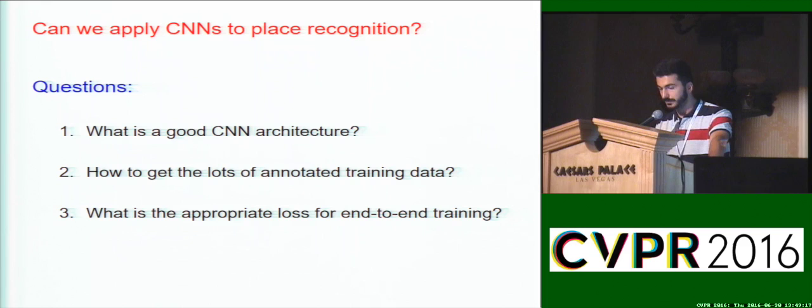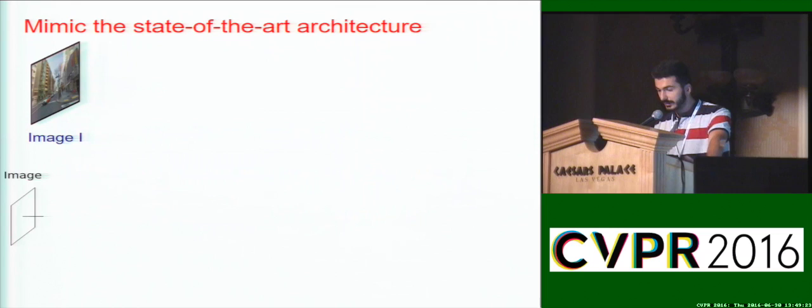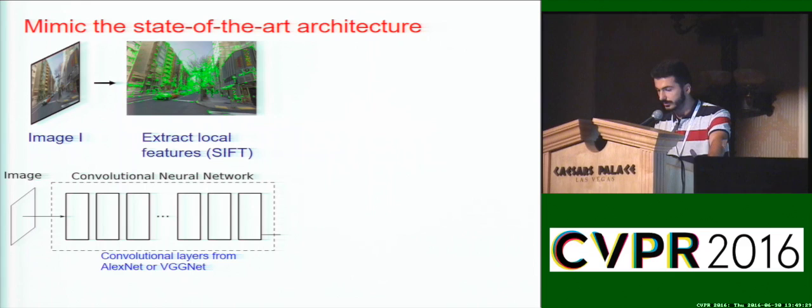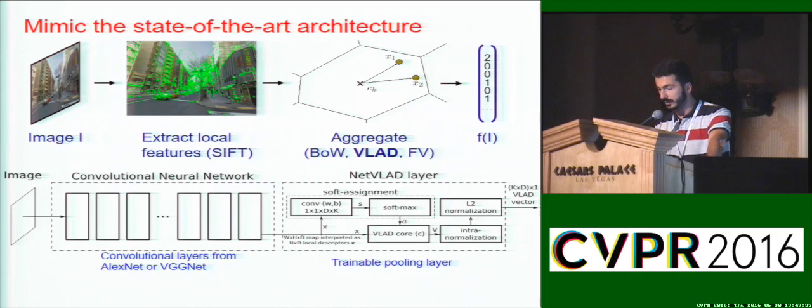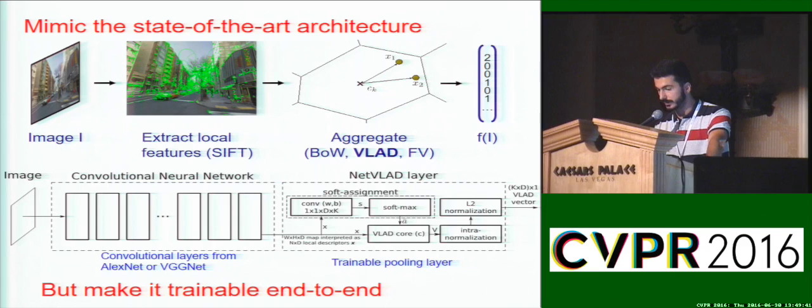We start with the appropriate CNN architecture. We mimic the state-of-the-art pipeline, where local descriptors are extracted from an image, but we replace SIFT with features computed using a CNN. Then, we aggregate the descriptors using NetVLAD, a new trainable pooling layer that we introduce. The key point to keep in mind is that unlike previous approaches, we will train this system end-to-end.